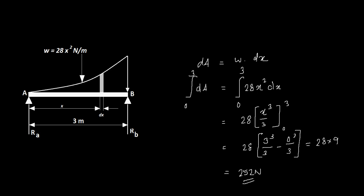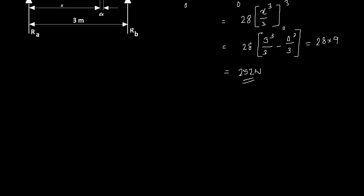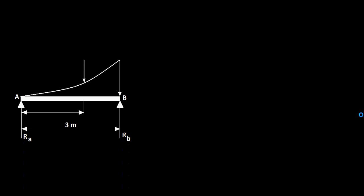We have calculated the total force, and now you need to calculate the centroid of the given area. We have 252 Newton total force. The force will be acting through the centroid of this area. The centroid is x̄ = (∫x dA)/(∫dA).